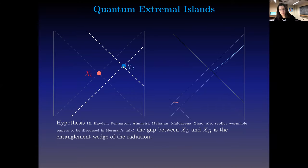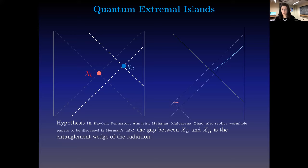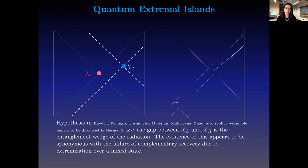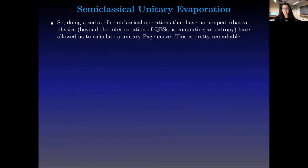This is a suggestive picture. If we look at the entanglement wedge of the right CFT and the left CFT, there is a gap region between them. Taking entanglement wedge reconstruction seriously, one might suggest — and indeed this was suggested — that the region between these two, the so-called quantum extremal island, is the entanglement wedge of the radiation we've already emitted. This is really a consequence of the non-complementary recovery I discussed: we're extremizing over a mixed state.